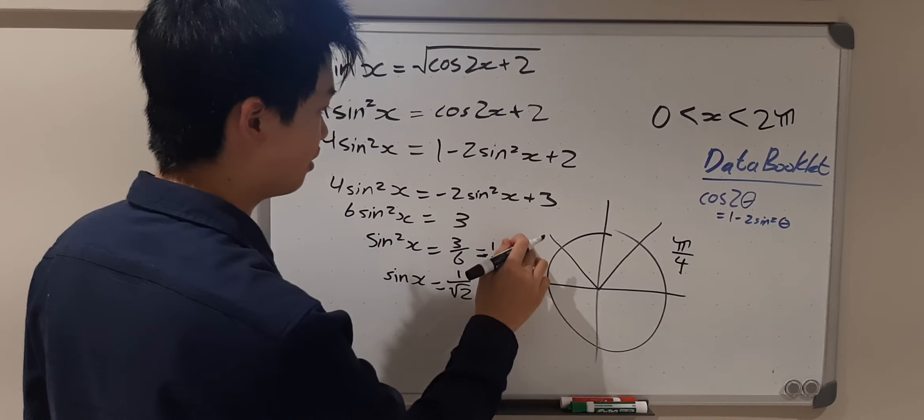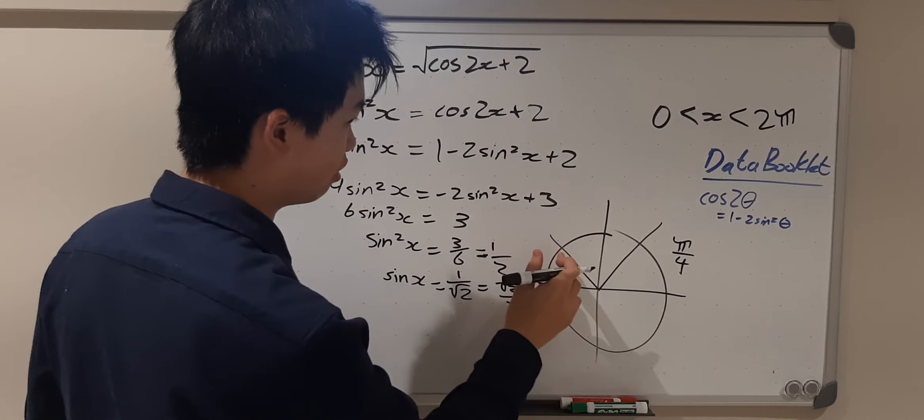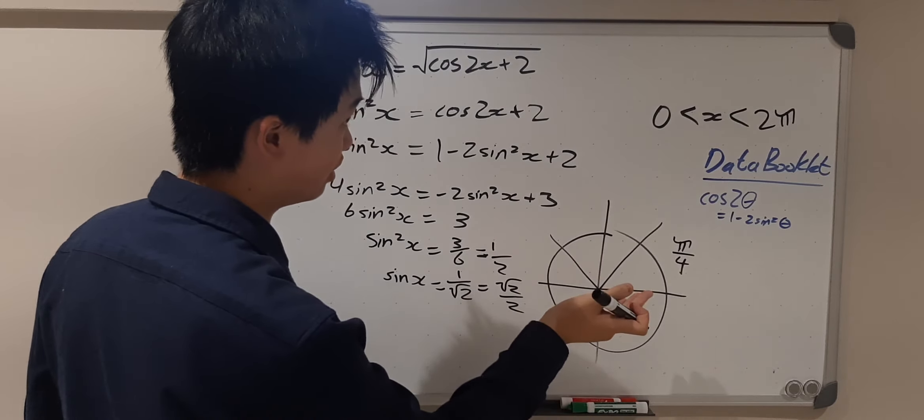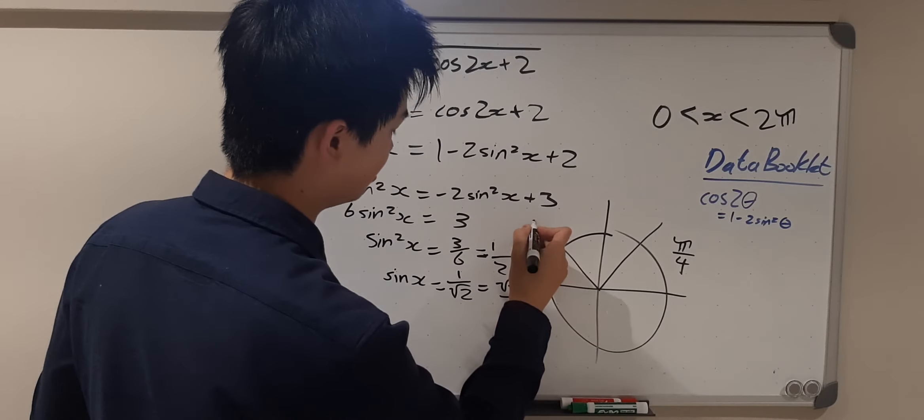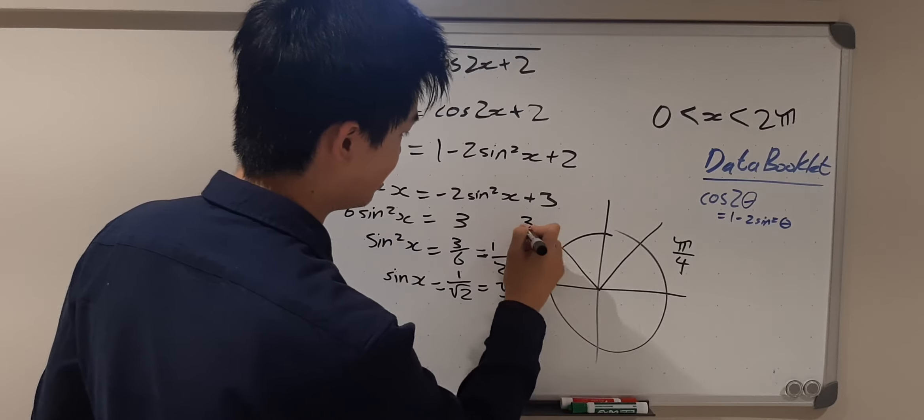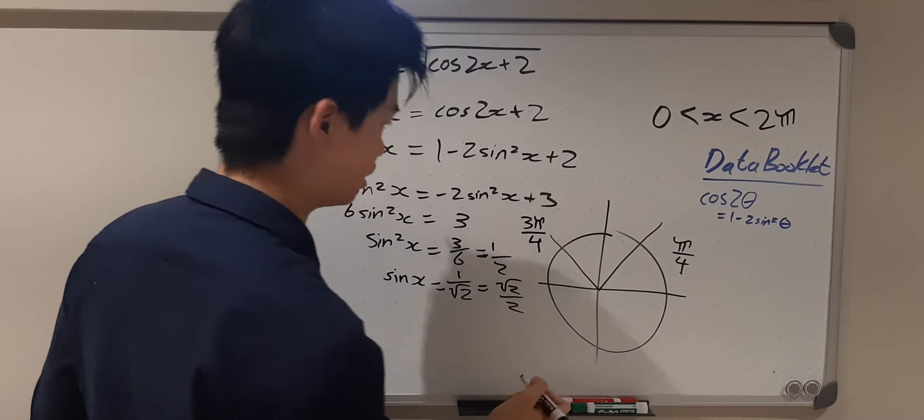and over here, that would be adding half a pi, so that would be 3π/4. There we go,